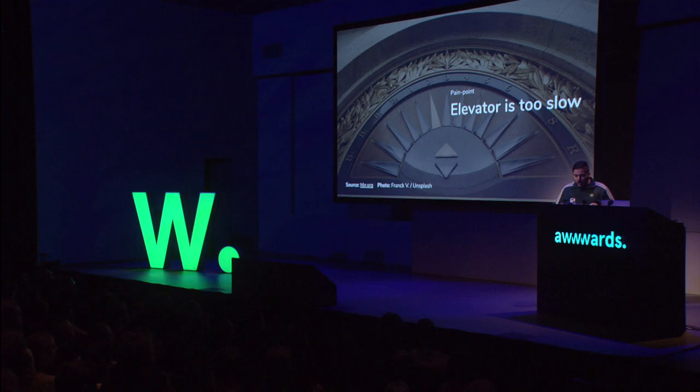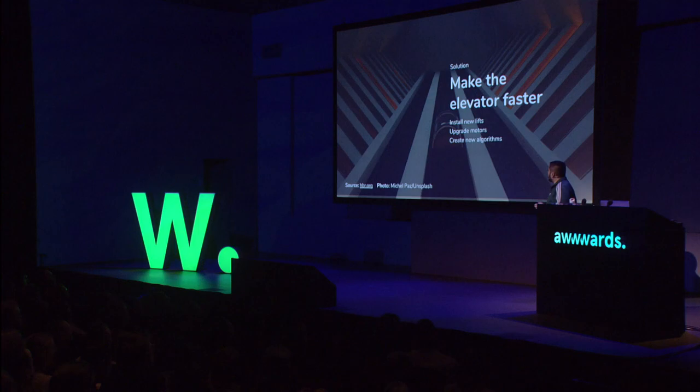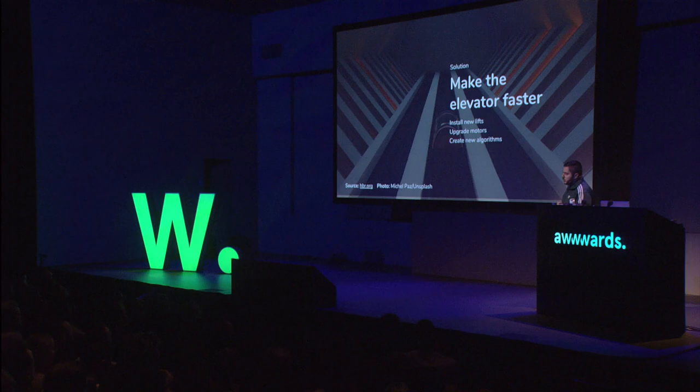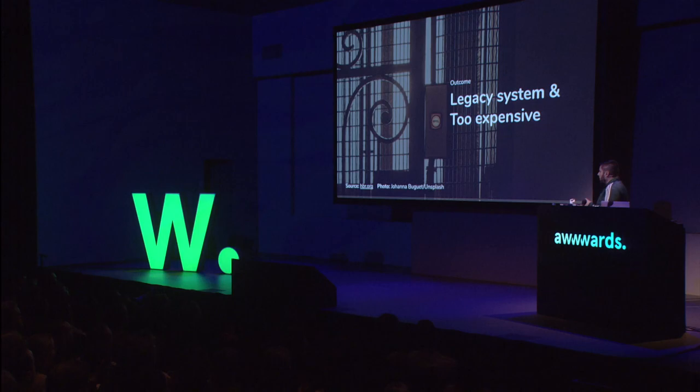Building managers get complaints from their tenants: the elevator's too slow. This is a big problem because you'll eventually lose tenants. Often they'll say, make the elevator faster. So what do you do? You install new motors, upgrade the systems, create new algorithms. But feasibility-wise, this is expensive. Ripping out an elevator is a long process and means fewer elevators in the building. It's the same if you've got an old site using legacy WordPress — ripping stuff out is not feasible.